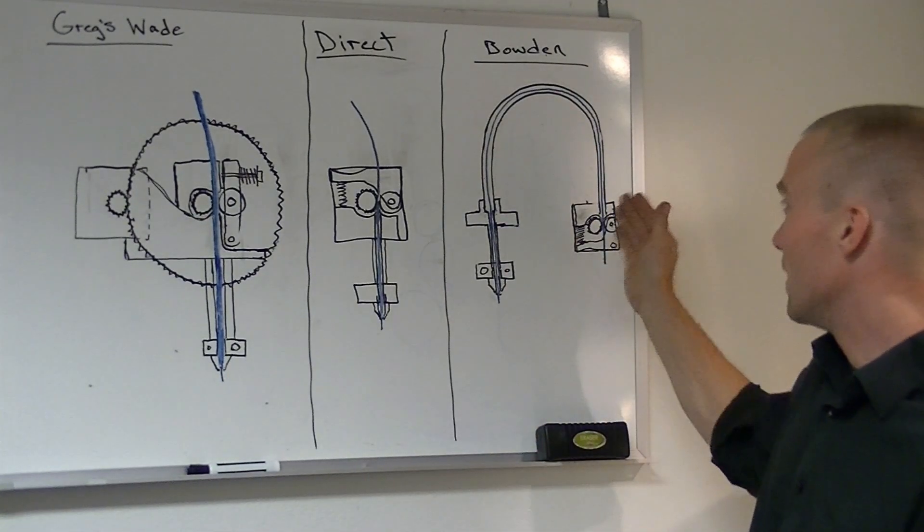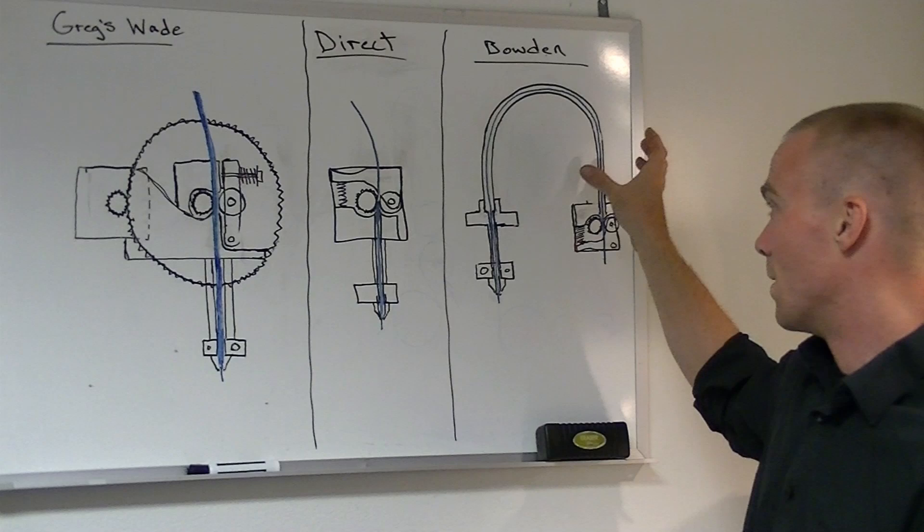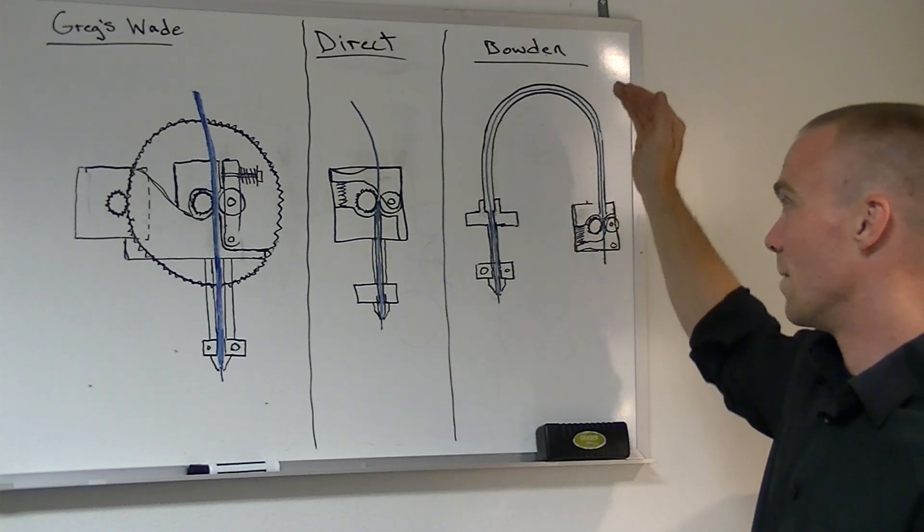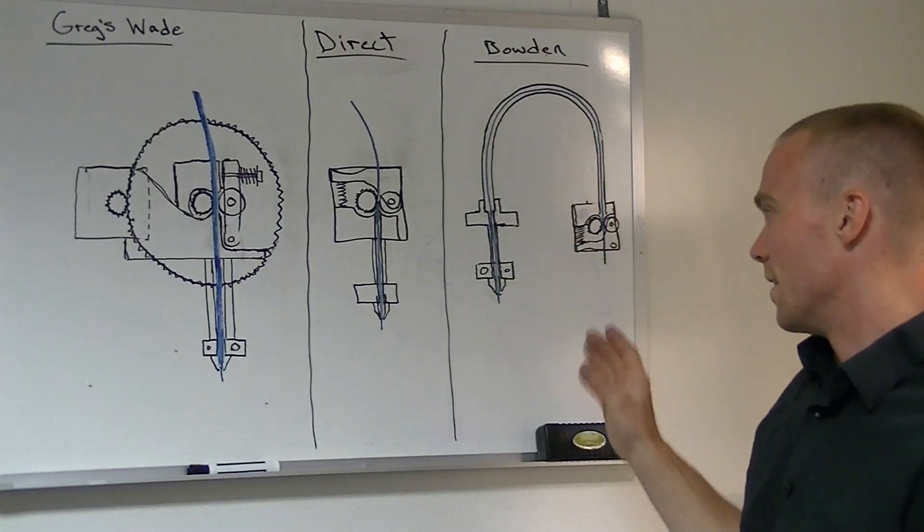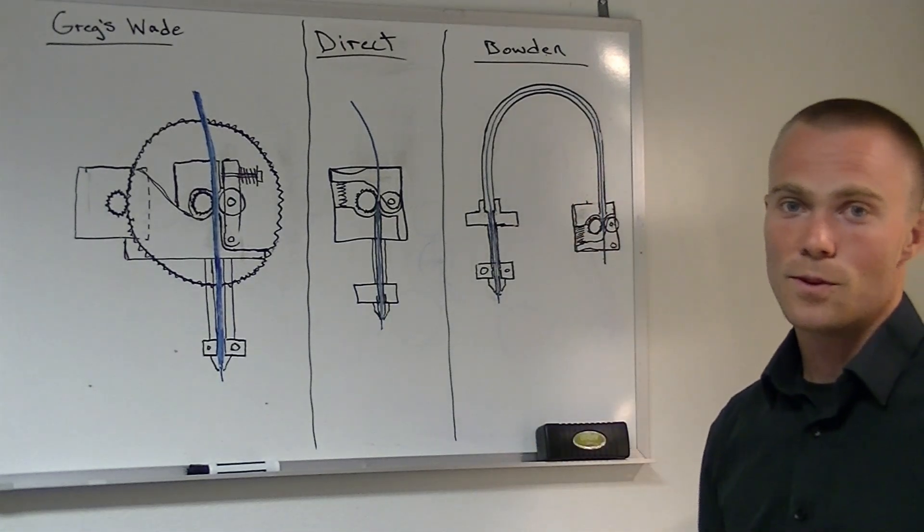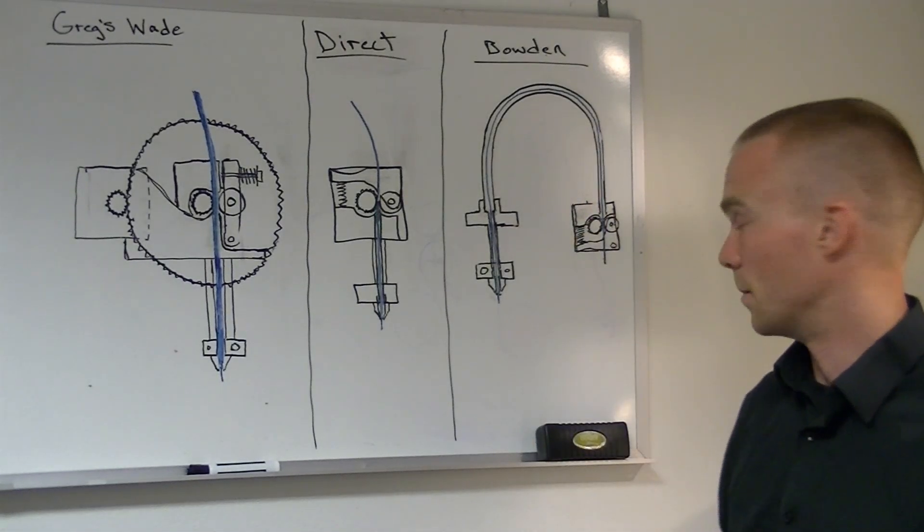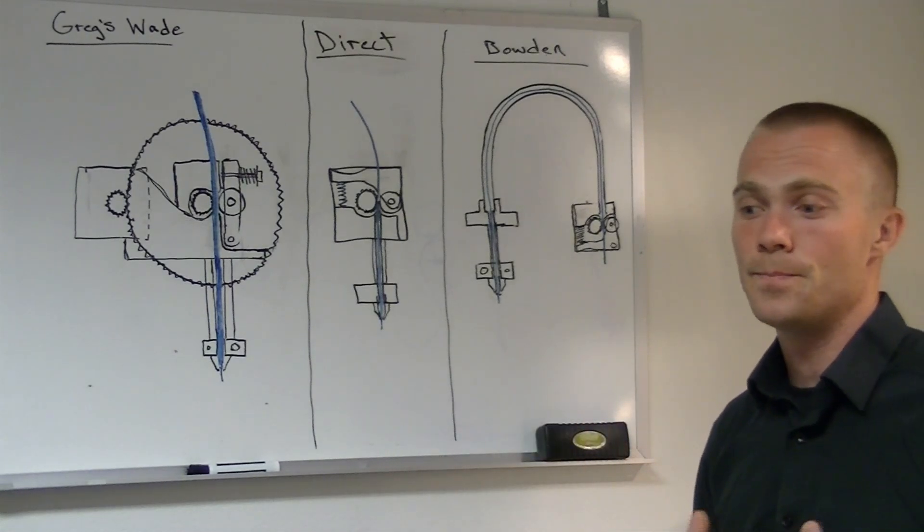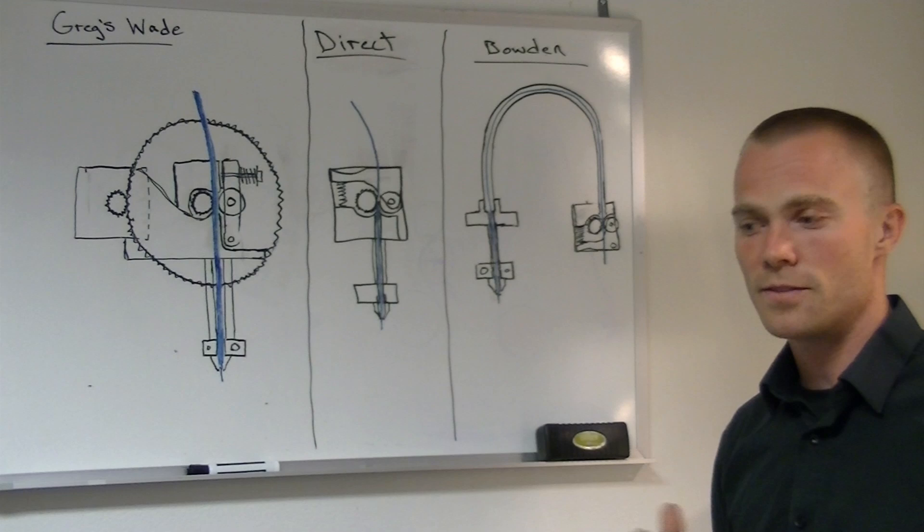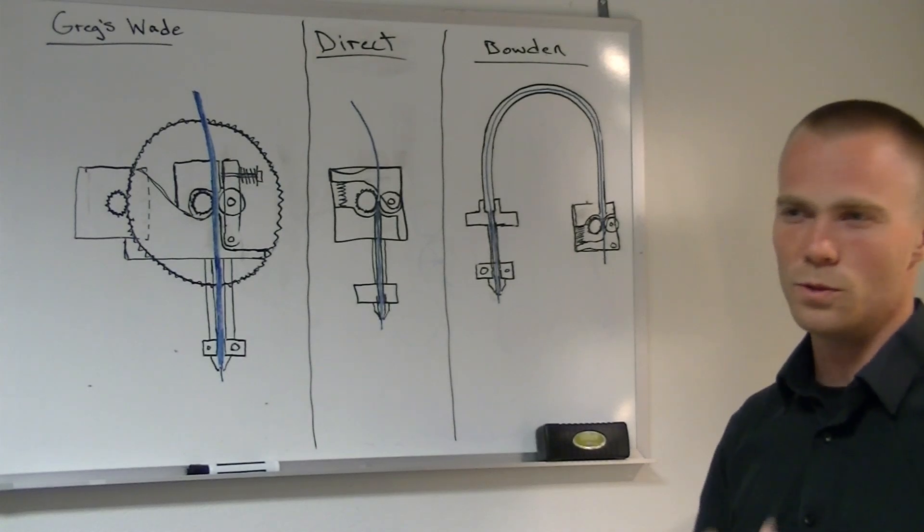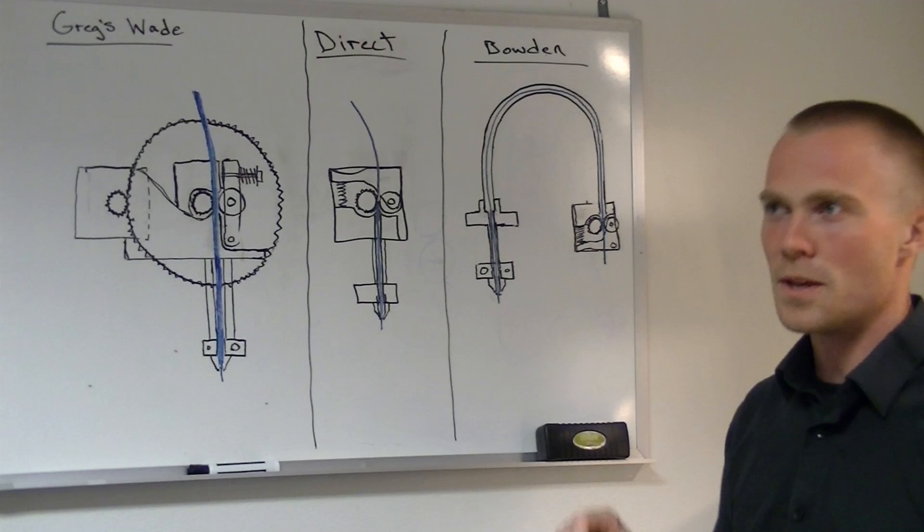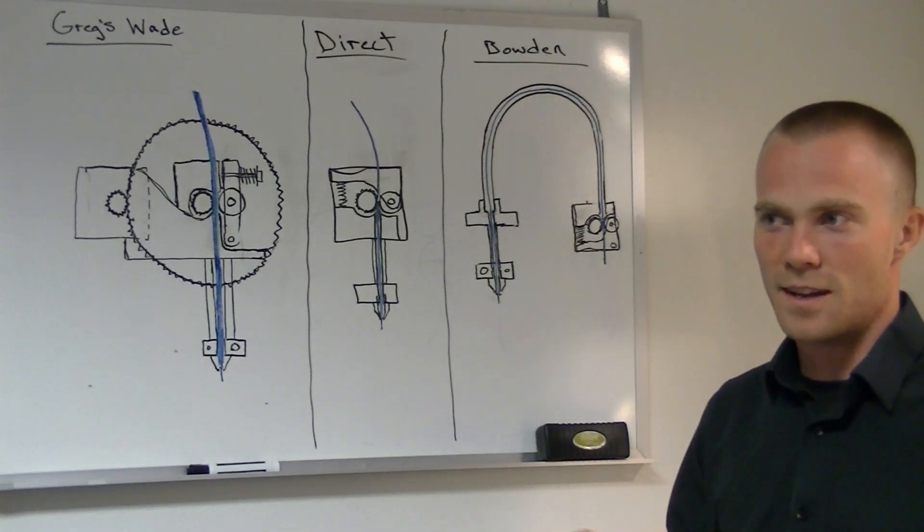So inside that guide tube, you can get compression of a flexible filament and you can get it buckling in there. So this setup is not ideal for Ninja Flex or for other flexible filaments. You still can get decent prints with this setup, but in general only in cases where you have like a continuous part if you're printing a tube or if you're printing something where you're not picking up and starting again and you're not worried about pulling strings back and forth.